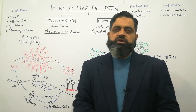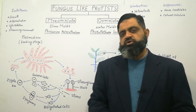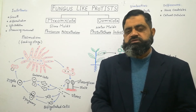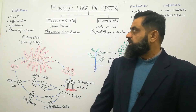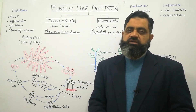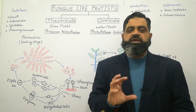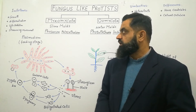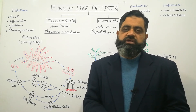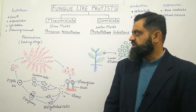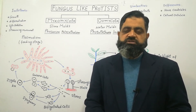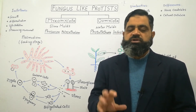Myxomycota is important in research because of its rapid propagation and cytoplasmic movement. In labs, scientists study its growth pattern — how it grows very fast — and differentiation, how its cells differentiate over time. They also study the cytoskeleton, which is involved in the amoeboid movement of the plasmodium feeding stage, and the streaming movement of its cytoplasm.